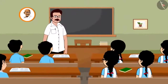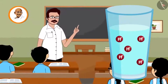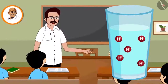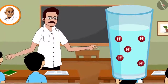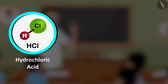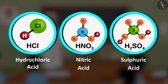When acid dissolves in water, it releases hydrogen ions. Acids have hydrogen in them — like HCl (hydrochloric acid), HNO₃ (nitric acid), H₂SO₄ (sulfuric acid), etc.